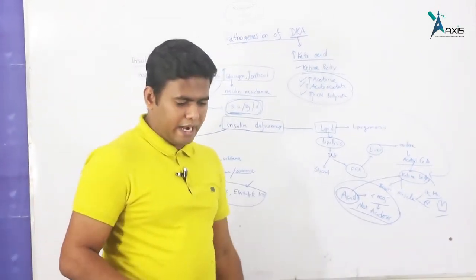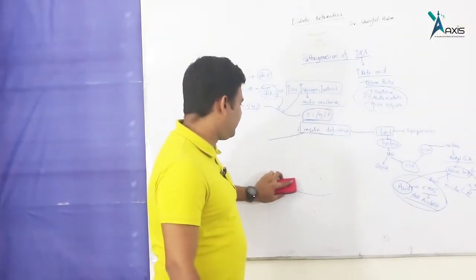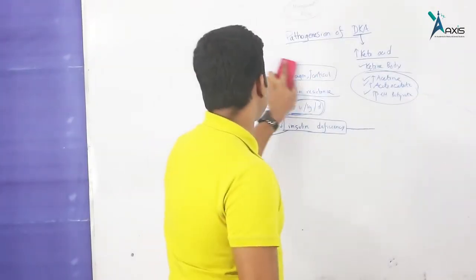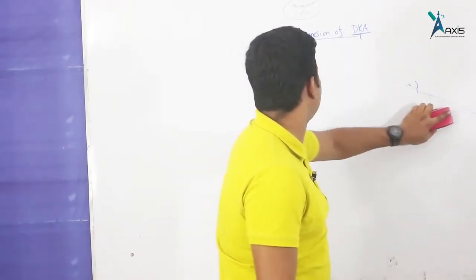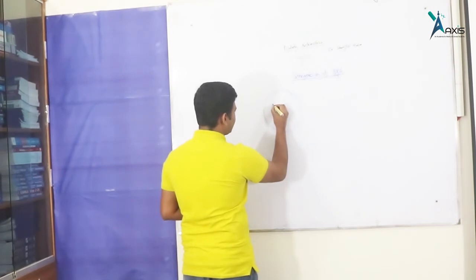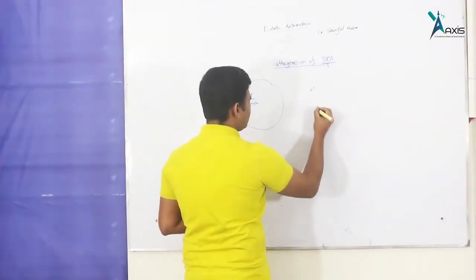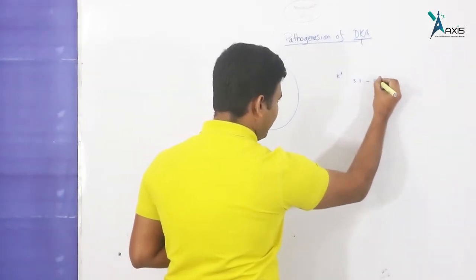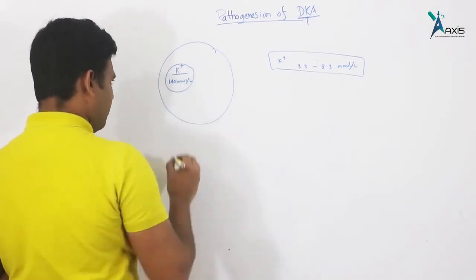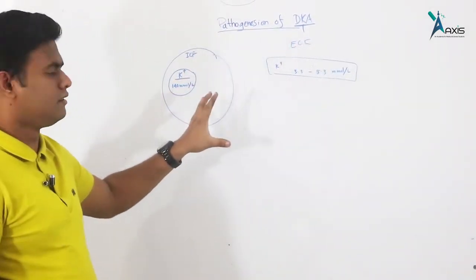Another important problem is potassium. In diabetic ketoacidosis, potassium levels are very dangerous. Potassium is mainly an intracellular ion — intracellular potassium is approximately 140 mmol/L, while serum potassium is normally 3.5 to 5.5 mmol/L. The balance between ICF potassium and ECF potassium is critical. Insulin normally drives potassium into the cell.